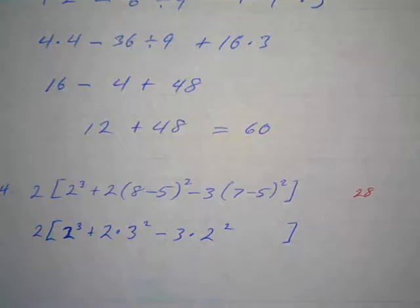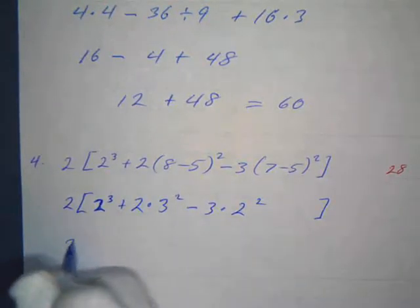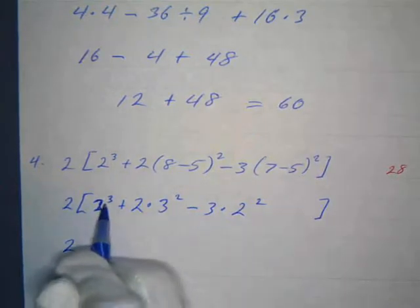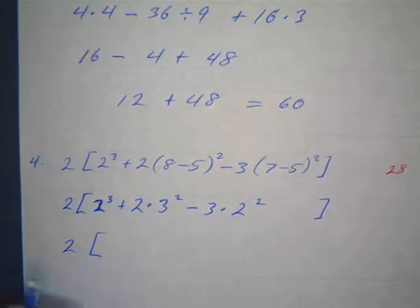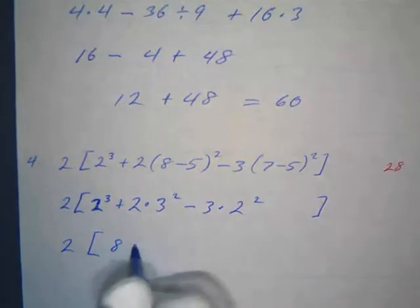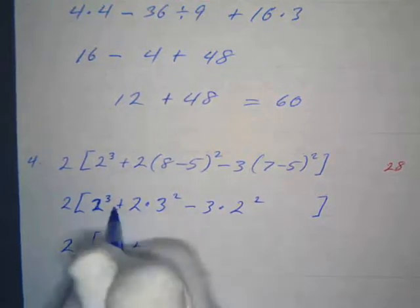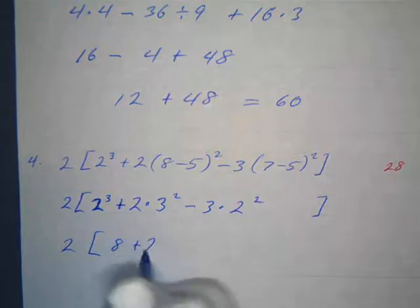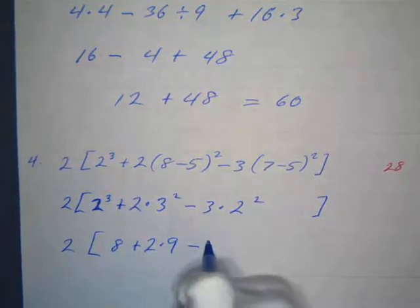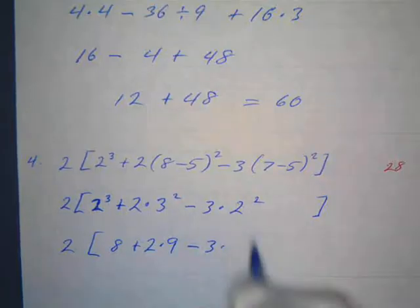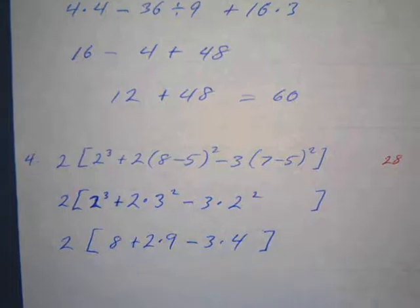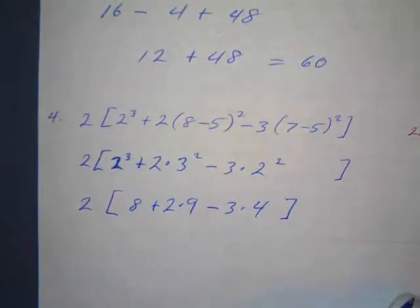The next thing we're going to do is exponents. I've still got the bracket because I'm working inside here till I get one number. And what's 2 cubed? Well, 2 times 2 is 4 times 2 is 8, so I'm going to substitute that 8 instead of 2 cubed. There's my plus, and 2 times, and what's 3 squared? 9. Minus 3 times, and what's 2 squared? 4. So now we did our exponents. 2 times 2 times 2 is 8, 3 times 3 is 9, 2 times 2 is 4.